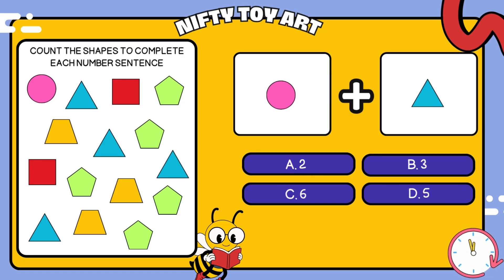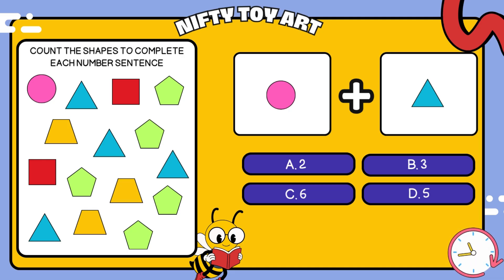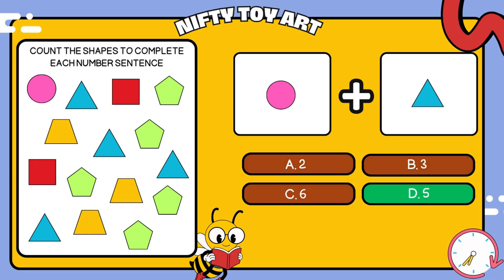I have a circle plus triangle. How many all together? That's right, five.